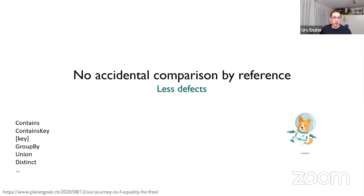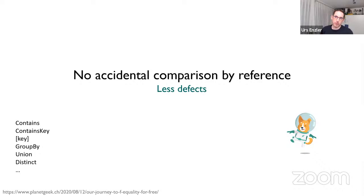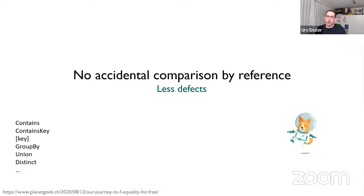In C#, comparing two records with arrays returns false because arrays are compared by reference. You'd have to implement equality methods and GetHashCode manually. This matters a lot with LINQ, which uses equality behind the scenes for contains, ContainsKey, GroupBy, Union, Distinct. In F#, if you stay in the F# type system, everything has deep equality out of the box — which is really nice.